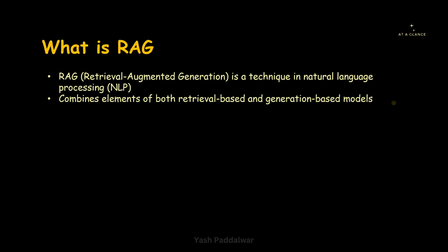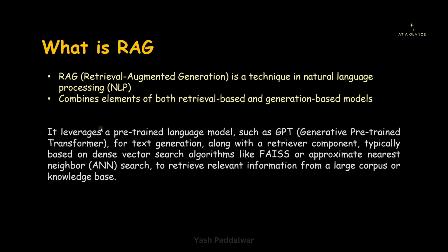In general terms, retrieval-augmented generation leverages a pre-trained language model — that is, one which has already been trained on a particular amount of data. For example, GPT, that is Generative Pre-trained Transformer. GPT is a very popular pre-trained language model used for various tasks like text generation. Along with that, it comes with a retriever component, typically based on dense vector search algorithms like FAISS — Facebook AI Similarity Search.